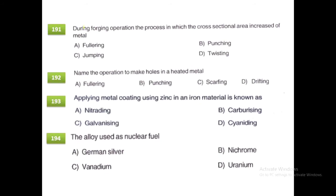During a forging operation, the process in which the cross-sectional area of metal is increased is called upsetting, also known as the jumping process. In upsetting, the cross-sectional area increases while the length decreases.